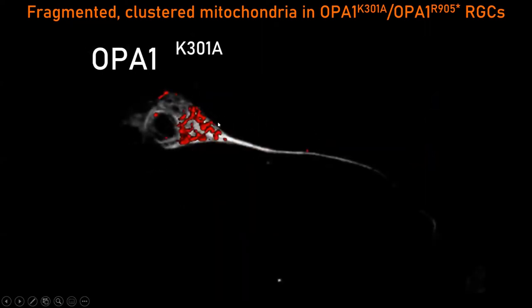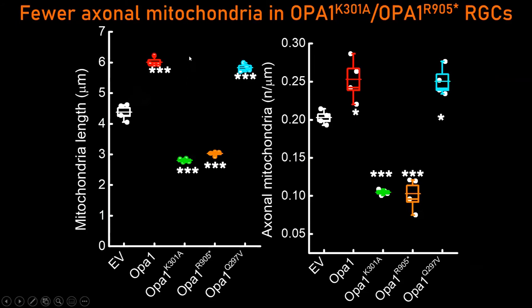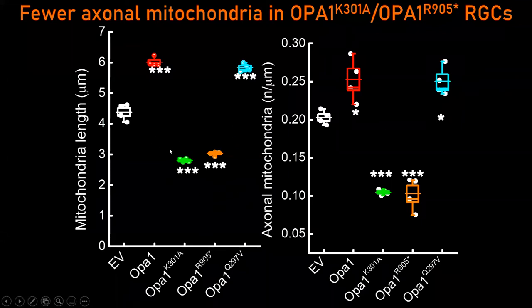However, if you express pathogenic mutants of OPA1, like K301A and R905STOP, what you observe is that mitochondria are now congregated towards the axon hillock, and you don't really see many mitochondria in the axon. This is a quantification of many experiments performed with primary retinal ganglion cells, and you see that whenever we have pathogenic ADOA mutants, we have shorter mitochondria that are excluded from the axon.